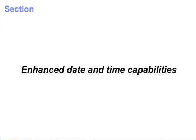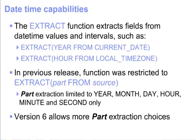This section discusses the enhanced date and time capabilities in Version 6. A significant date and time enhancement in Version 6 involves the extract function. The extract function extracts fields from date-time values and intervals, such as extract year from current date, or extract hour from local time zone.